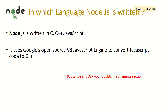In which language is NodeJS written? NodeJS is written in C, C++, and JavaScript. It uses Google's open-source V8 JavaScript engine and converts that JavaScript to C++ code. That makes it easy to run JavaScript not only in the browser but across the entire system, making it a powerful server-side language.